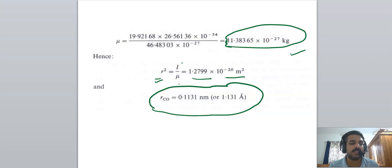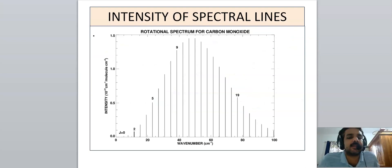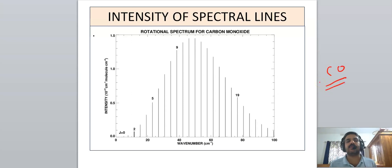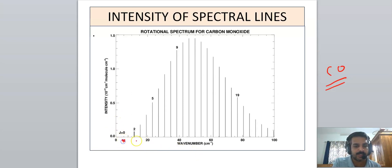Work out these problems — there are many similar problems in other textbooks as well. Now let's discuss the intensity of spectral lines. This is the microwave spectrum of carbon monoxide in the real spectrum. The wavenumber is on the x-axis, and the transitions shown are from J=0, J=1, J=2, J=3 and so on up to J=16.